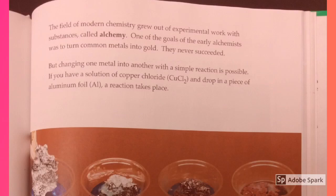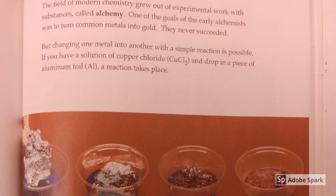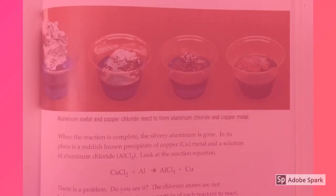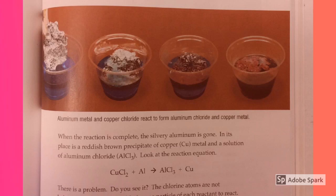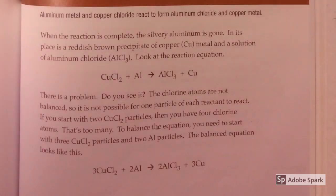The field of modern chemistry grew out of experimental work. One of the goals of early alchemists was to turn common metals into gold — they never succeeded. But changing one metal into another with a simple reaction is possible. If you have a solution of copper chloride, CuCl₂, and drop in a piece of aluminum foil, Al, a reaction takes place. When the reaction is complete, the silvery aluminum is gone. In its place is a reddish-brown precipitate of copper, Cu, metal, and a solution of aluminum chloride, AlCl₃. Look at the reaction equation.